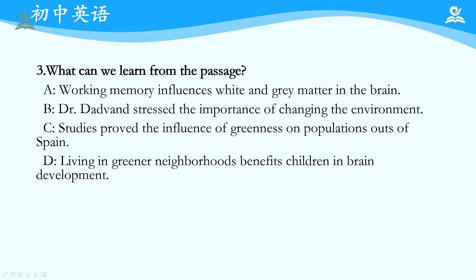D选项：Living in greener neighborhoods benefits children in brain development，这也是全文一直强调的finding，整个文章围绕这种finding展开论述，所以选D。这一课时就结束了，相信大家已经收获了更多工具来解读说明文。当然这只是锦上添花的效果，希望大家在实战演练当中收获更多体验，直至能够在说明文解读上变得更加强大。谢谢大家。